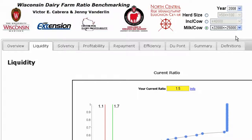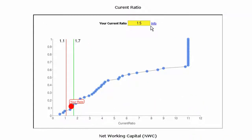From here, we can simply enter our own information in the yellow box, and then see where we fall on the graph. The trendline shows the distribution of all farms in the database who meet the production criteria we selected. The red dot represents our current position, and gives a visual reference of where we fall within this distribution.